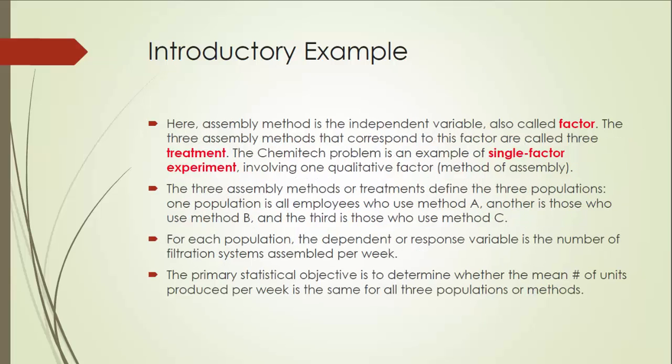Here, assembly method is the independent variable, also called factor. The three assembly methods that correspond to this factor are called three assembly treatments. The Chemitech problem is an example of a single-factor experiment involving one qualitative factor — method of assembly. As a result, this is also called one-way ANOVA.